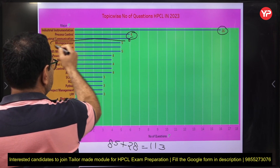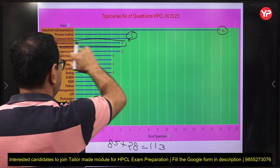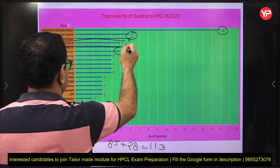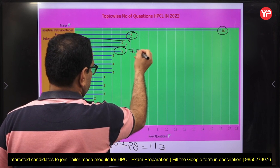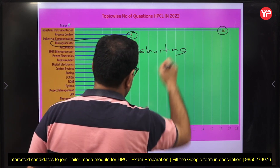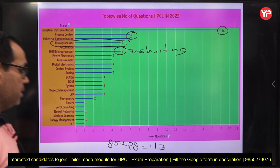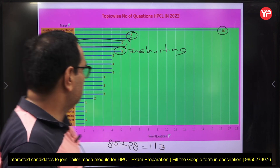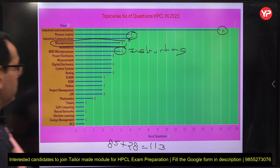Microprocessor is also easy — they mainly ask about the 8085 microprocessor with about 5 questions. Focus mainly on the 8085 instruction set — the different instructions are simple. Also know the pin diagram and flags of the 8085. Once you read about the flags, you can get this done.